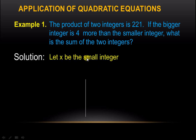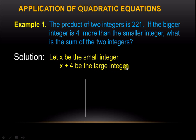Let us say that x is the smaller integer and x plus 4 is the larger or bigger integer. We get x plus 4 because the problem states that the bigger integer is 4 more than the smaller integer.